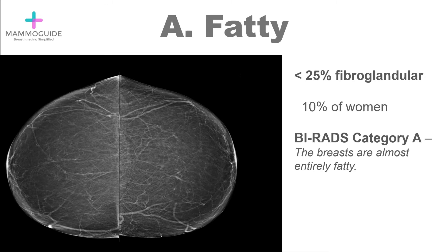The first category is fatty breast tissue. The actual BIRAD wording is that the breasts are almost entirely fatty. This is where there is less than 25% fibroglandular tissue present within the breast. It's about 10% of women that have this type of breast tissue. If you had your preference, you would prefer that every woman's mammogram looked like this, because it's very easy to identify a breast cancer when the tissue is composed almost entirely of fat.